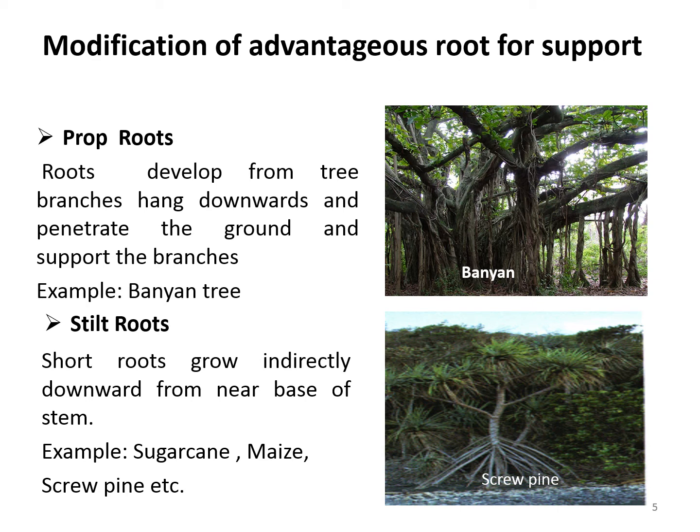The next type is stilt roots. The stems of maize and sugar cane have supporting roots coming out of the lower nodes of the stem. They are called stilt roots and are mainly found in monocot shrubs and trees.